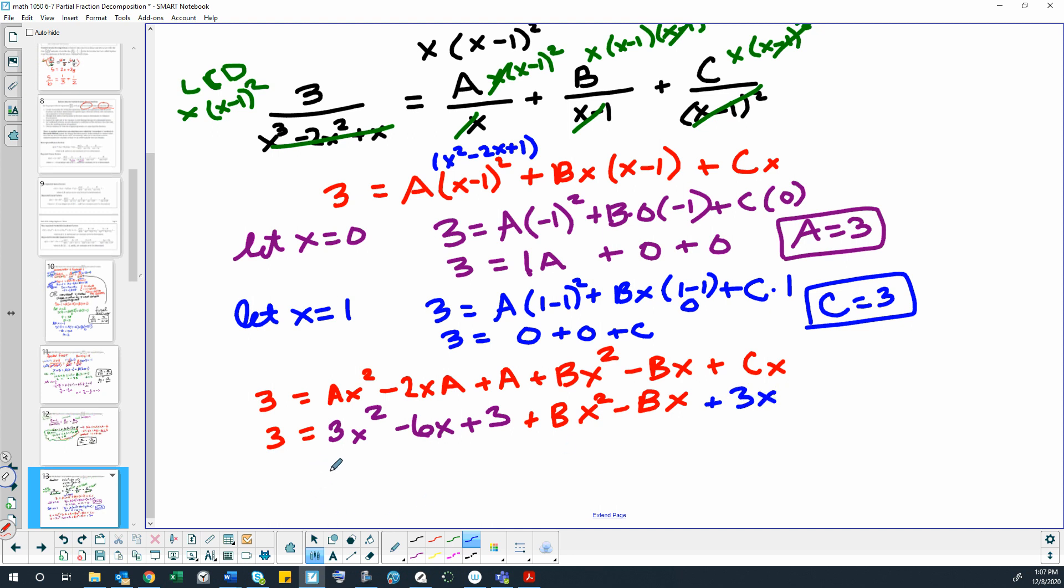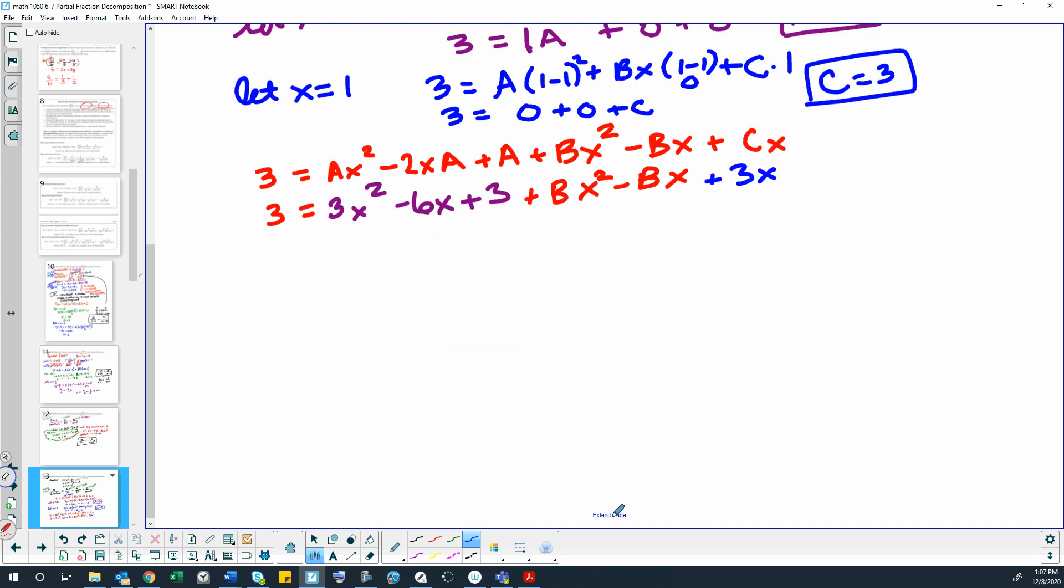Now we're going to gather up terms. So we'll have our x squared terms. x squared terms would be zero on the left because there's no x squared terms. So zero equals 3 is an x squared term and B x squared is an x squared term, so that would be 0 equals 3 plus B. Well that gave us the answer right there, B is negative 3.